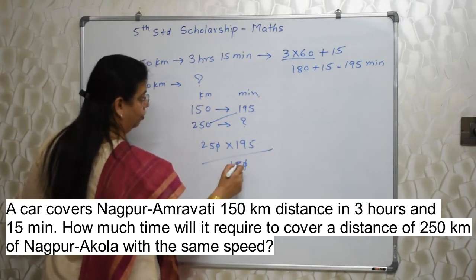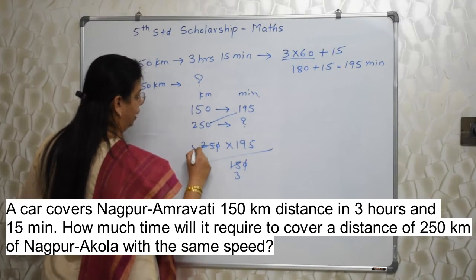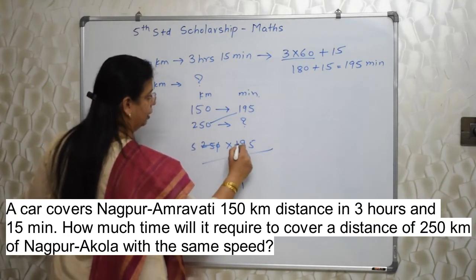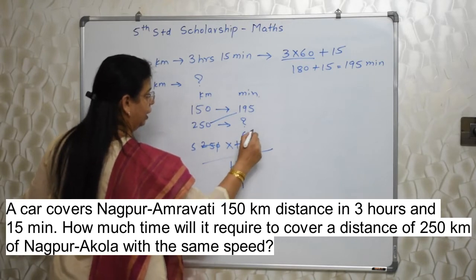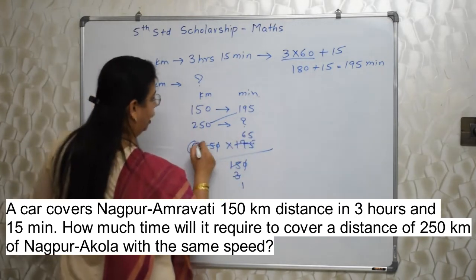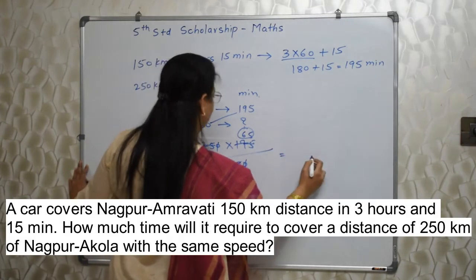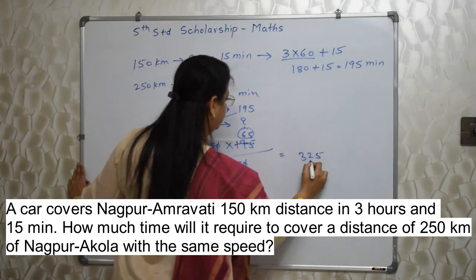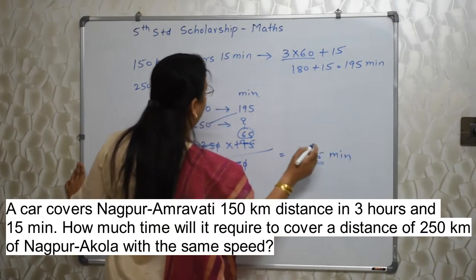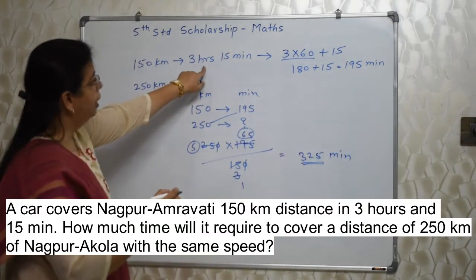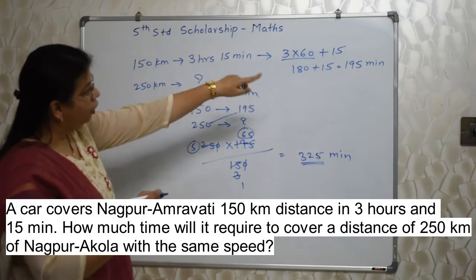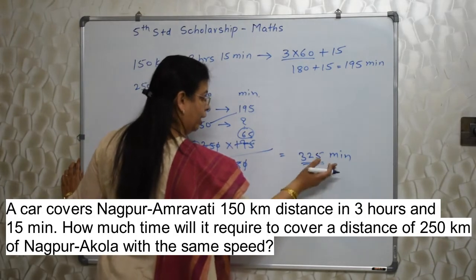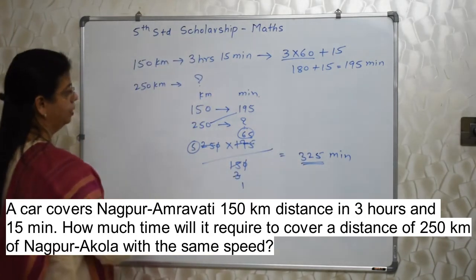Simplifying: the 10s cancel, 5 threes, 5 fives — then 3 ones are, 3 sixes are 18, then 3 fives are 15. So we get 5 and 65. So 5 fives are 25, 5 sixes are 30 plus 3 — giving us 325 minutes.